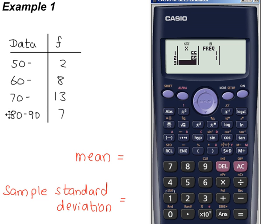This one is 70 to 80. If you don't want to mentally work out the midpoint, you can put a calculation in here. If I'm thinking, that's 70 to 80, it's halfway, so I'll do 70 plus 80 and then divide by 2.